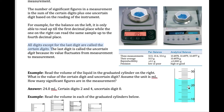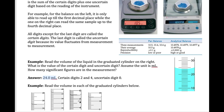For a graduated cylinder, you read at the lowest point of the liquid, called the meniscus. First, determine the value of each mark: if the numbers 20 and 30 are shown with 10 marks between them, subtract 20 from 30 to get 10, then divide by 10 — each mark equals 1. So marks read 20, 21, 22, and so on. If the meniscus is exactly at 24, you still add the uncertain digit, writing the volume as 24.0 milliliters.